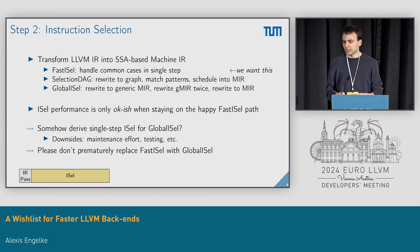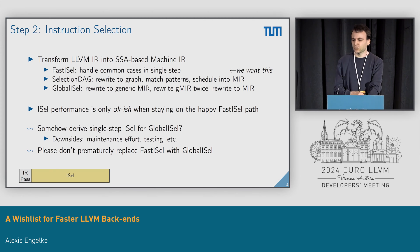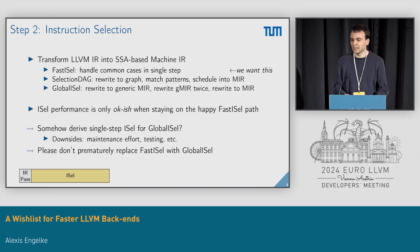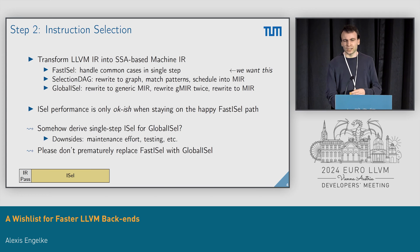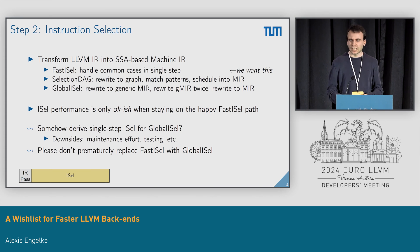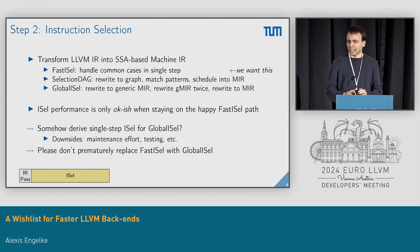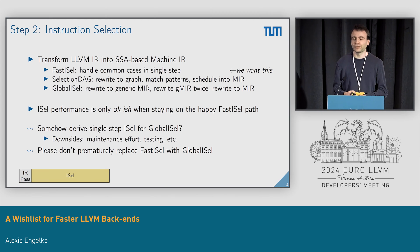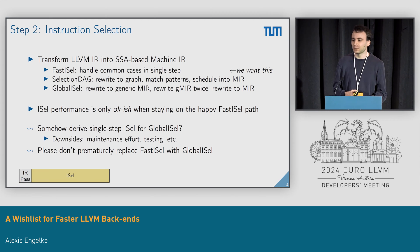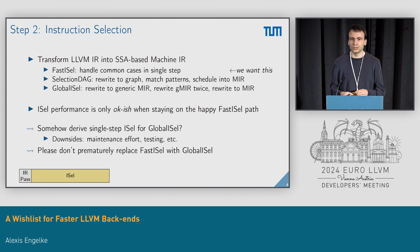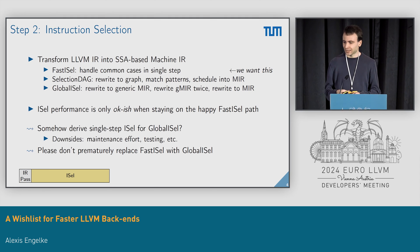What could we do? We could try to derive a single-step instruction selection for GlobalISel where we don't rewrite the IR as often. But in any case, we would ask to not remove FastISel prematurely until GlobalISel performance has caught up.